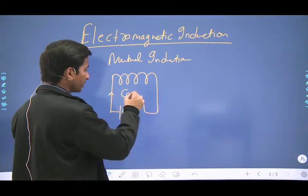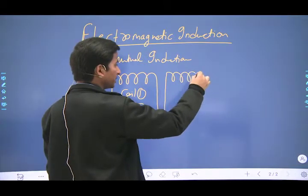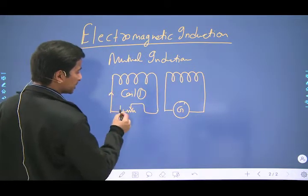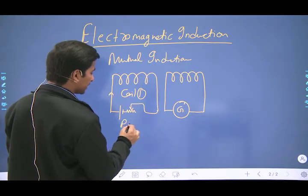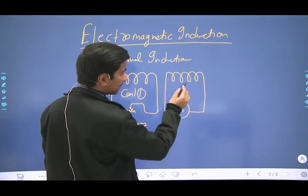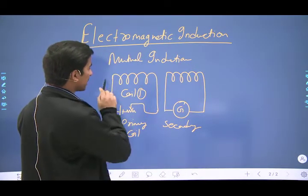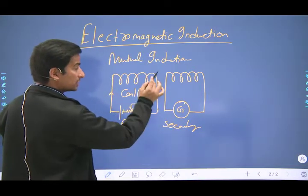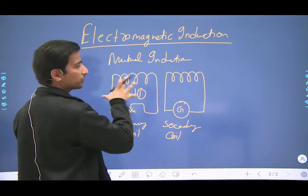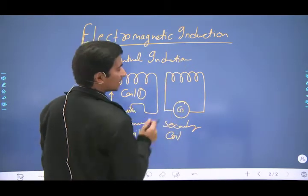Say that this is coil 1 — the primary coil — and another coil placed in its vicinity, in its surroundings, has only a galvanometer connected to it — this is the secondary coil. What we have to do is change the amount of current flowing in the primary coil. Whenever you are changing the current flowing in the primary coil, the magnetic field in the vicinity of this primary coil is continuously changing. The secondary coil itself is placed in the magnetic field of the first, so if the magnetic field of the first coil changes, it will influence the number of magnetic field lines passing through the second coil.